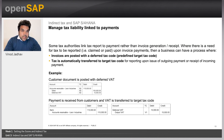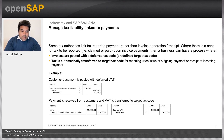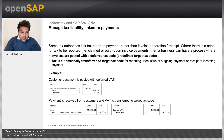Managed tax liability linked to payments: some tax authorities link tax reporting to payment rather than invoice generation or receipt. Where there is a need for tax to be reported upon invoice payments, a business can have a process where invoices are posted with a deferred tax code, or tax is automatically transferred to a target tax code for reporting upon issue of an outgoing payment or receipt of an incoming payment. For example: a customer document is posted with deferred VAT — the account receivable is deferred to VAT with the debits and credits. Then when payment is received from the customer, VAT is transferred to the target tax code, with the corresponding account debits and credits.